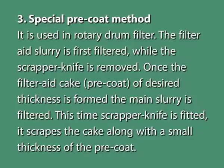The third is the special pre-coat method, used in rotatory drum filters. The filter aid slurry is first filtered while the scraper knife is removed. Once the filter aid cake known as the pre-coat of the desired thickness is formed, the main slurry is filtered with the scraper knife fitted. It scrapes the cake along with a small thickness of the pre-coat.